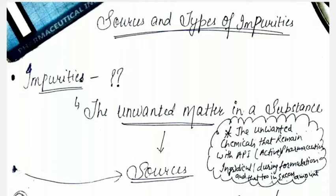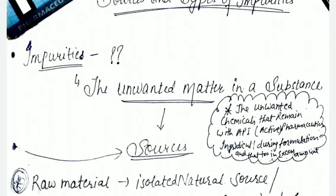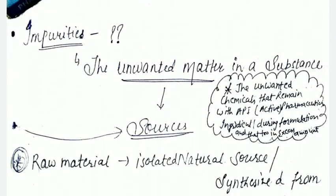When we try some medicine and something else remains, we call it impurity. This is the unofficial definition. The official definition is: the unwanted chemicals that remain with the API - API means active pharmaceutical ingredients. These unwanted chemicals remain with the formulations when they are made. They can exist in a limited amount, but when they exceed that amount, then we have problems with impurities.